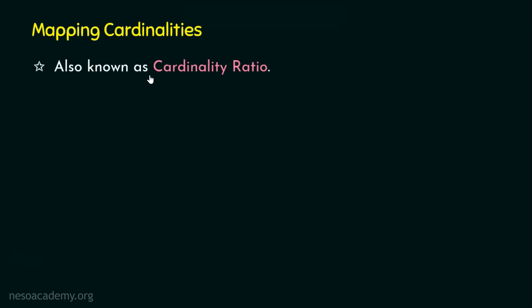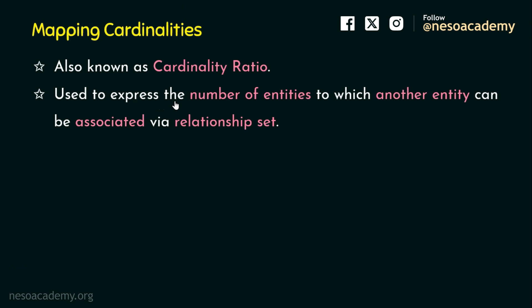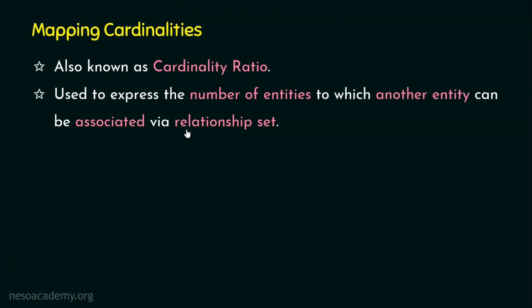Mapping cardinality is also known as cardinality ratio. Mapping cardinality is used to express the number of entities to which another entity can be associated via a relationship set. That is, how many entities in one relation can be associated with another entity of another relation. When two entities are related via a relationship, this cardinality expresses how entities in one entity set are associated with entities in another entity set.